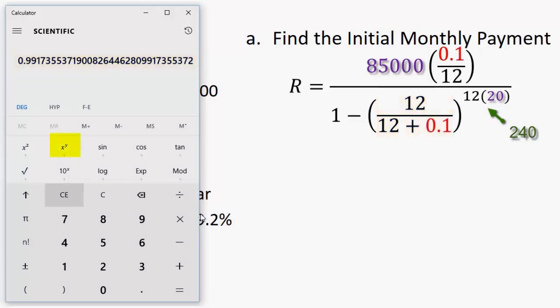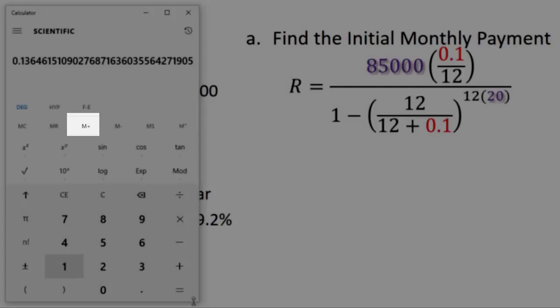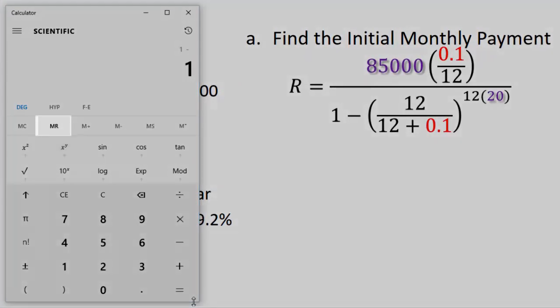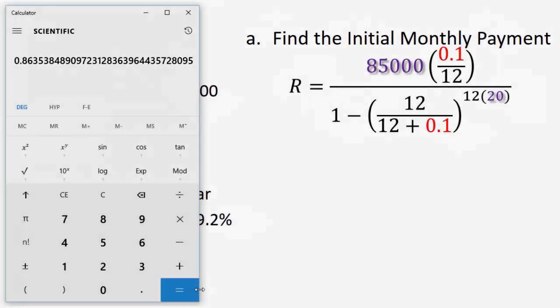So I'm just going to raise it, x to the y, to the 240th power. Hit equals. I want to subtract 1 minus this number. So one way to do that would be to hit memory plus. That's just going to save that value. And then I'm going to hit 1 minus, and I'm going to recall that value, memory recall, and that equals 0.863 and so on.